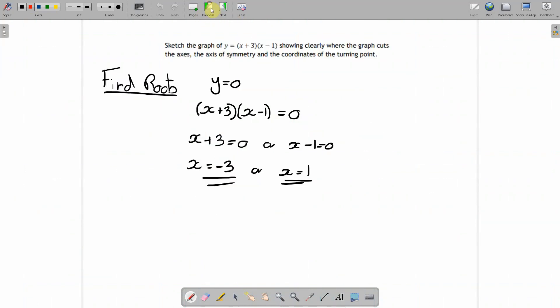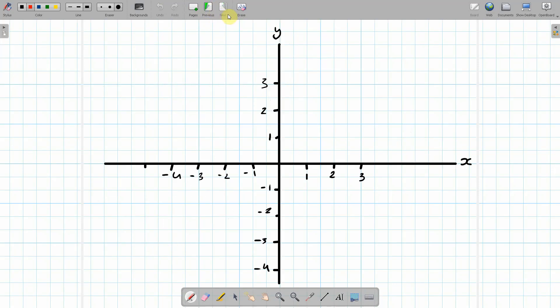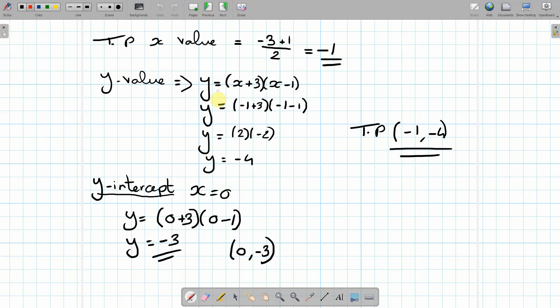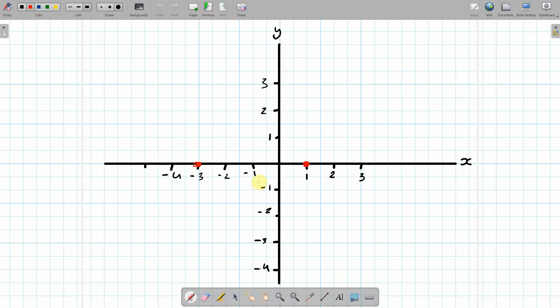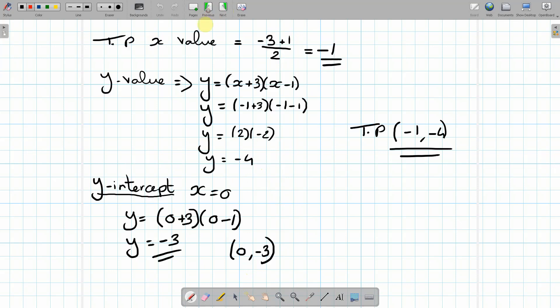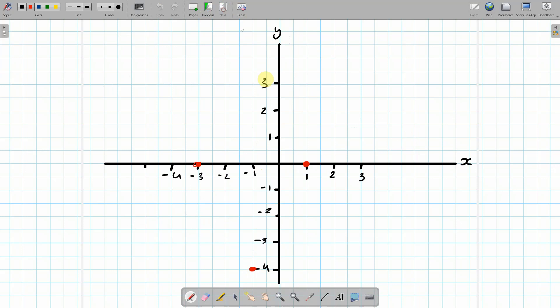So if we plot the roots first, so our roots are going to be at minus 3 and 1. So our roots are going to be here and here. So that's where we cut the x-axis. And then the turning point is minus 1, so along to minus 1 and then down to minus 4. And then the y-intercept was 0 and then minus 3. So that will be down here.